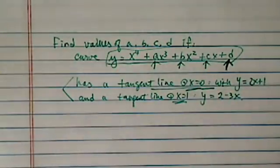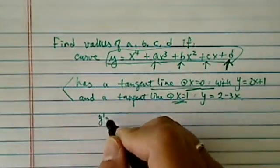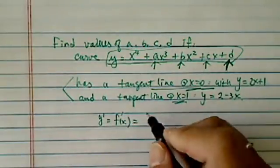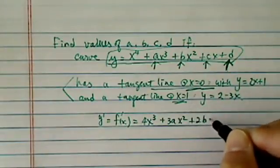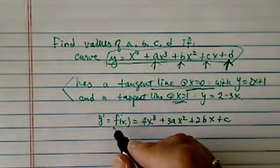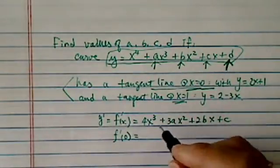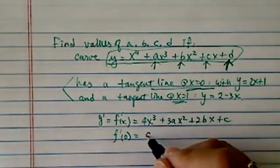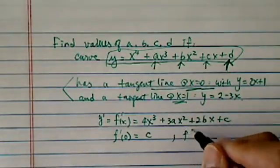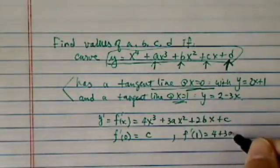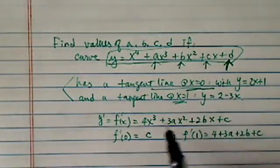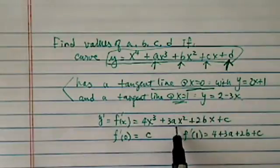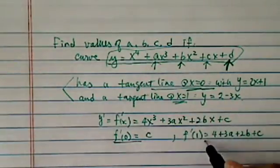This is a pretty involved problem, but it's not hard. The trick is to keep track of what we're doing. Let's find y prime, which equals f'(x). That's an easy one: 4x³ plus 3ax² plus 2bx plus c. So f'(0), everything is 0, so I have c. And f'(1), I have 4 plus 3a plus 2b plus c. We're going to use this later on.